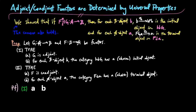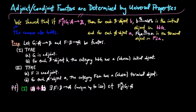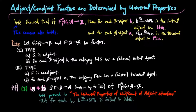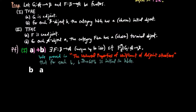Let's prove part 1, that (a) implies (b). If g is adjoint, then there exists a left adjoint f, unique up to natural isomorphism, with unit η and counit ε. We proved in the video on universal properties of unit and counit in adjoint situations that for each object b, η_b is initial in b over g, which is what we wanted to show.